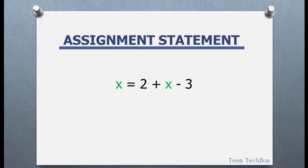In this example we have our expression to be 2 plus x minus 3 and it's on the right hand side as you can see. We also have the equal to sign which is our assignment operator and we have the variable x on the left which stores the result of this expression over here.